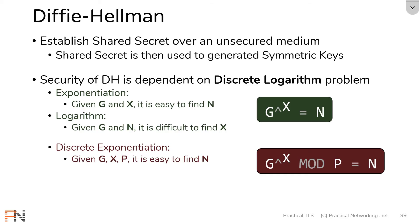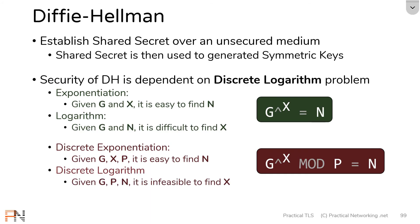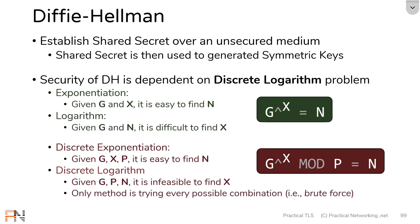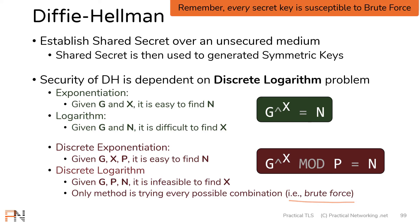But a discrete logarithm problem means you know g, p, and n and you're trying to figure out x. And there is no simple way to solve a discrete logarithm problem. The only way is to pretty much try every single combination — i.e. brute force. The idea behind Diffie-Hellman is to use numbers so big that it would take an attacker thousands and thousands of years to brute force your key.